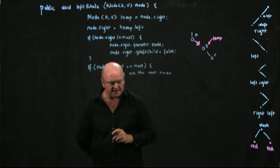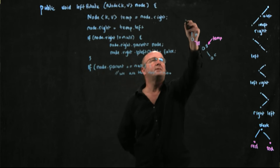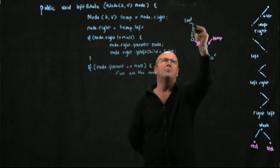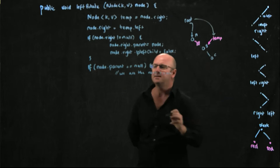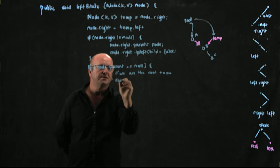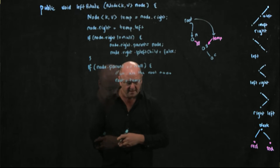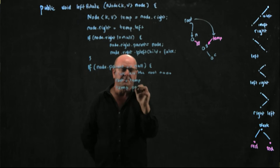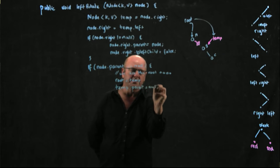If we're the root node, we have a couple of things to handle. First, we have our globally scoped root pointer that currently points to us — we need to make that point to temp. So we set root equal to temp, and of course temp dot parent is equal to null.